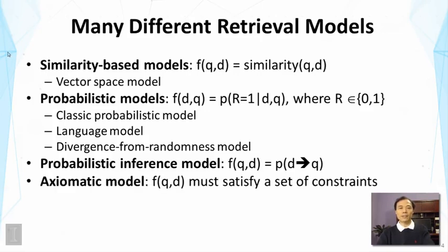And finally, there is also a family of models that are using axiomatic thinking. Here the idea is to define a set of constraints that we hope a good retrieval function to satisfy. So in this case, the problem is to seek a good ranking function that can satisfy all the desired constraints.